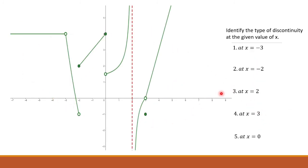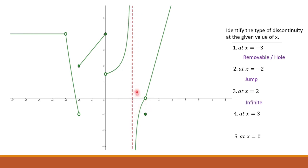Let us try to answer this exercise: identify the type of discontinuity at each given value of x. At x equals negative 3, the limit exists and we do not see any defined value, so this is removable. At x equals negative 2, there is a gap, so we have jump discontinuity. At x equals 2, there is a vertical asymptote, so we have infinite discontinuity. At x equals 3, the limit exists and f of 3 equals 1, but the limit is not equal to f of c, so this is removable or hole. At x equals 0, there is a gap, so we have jump discontinuity.